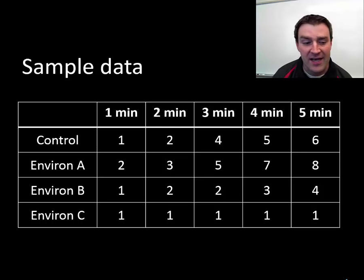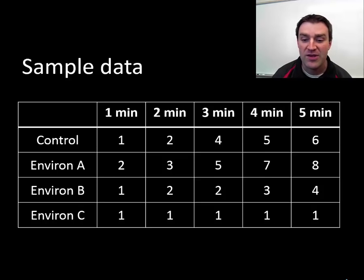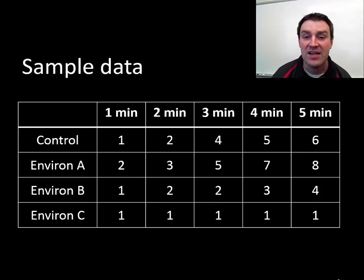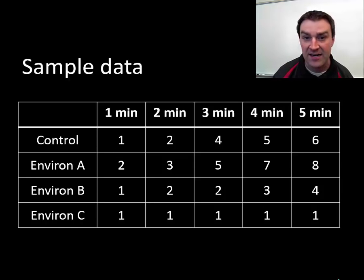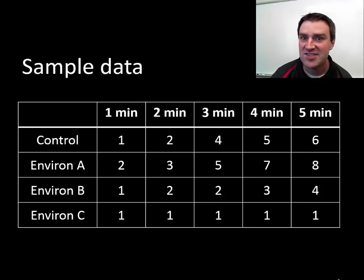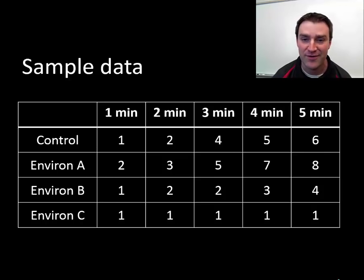To give you some sample data: when you mix the test tubes without changing anything — that's your control group — maybe after about five minutes it looks like a 6 on the scale of 1 to 10. Environment A would speed up the enzyme reaction because it looks more brown over the same five minutes — higher on the scale. Environment B would slow down the enzyme's activity because it's lower on the scale after five minutes. Environment C doesn't change color at all — it stays at 1 — which would be a great example of something that stops the enzyme from doing what it's supposed to do.